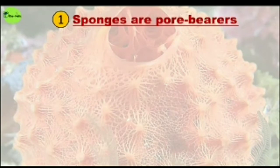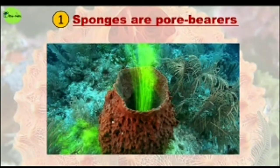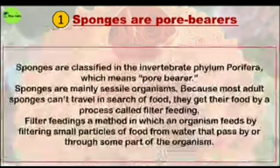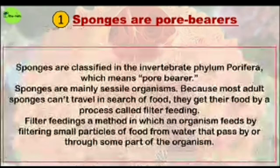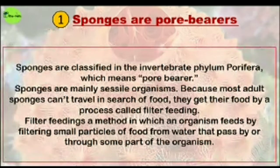First, sponges are pore bearers. Sponges are classified in the invertebrate phylum Porifera, which means pore bearer. Sponges are mainly sessile organisms — sessile meaning the lack of motility — because most adult sponges cannot travel in search of food. They get their food by a process called filter feeding, a method in which an organism feeds by filtering small particles of food from the water that passes by or through some part of the organism.